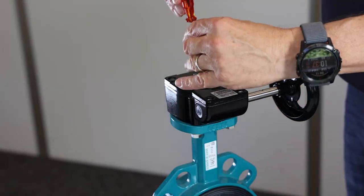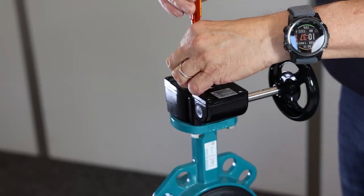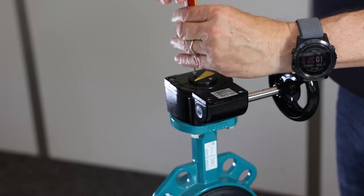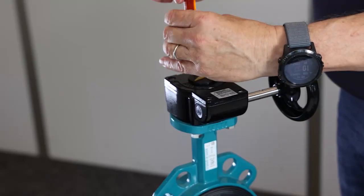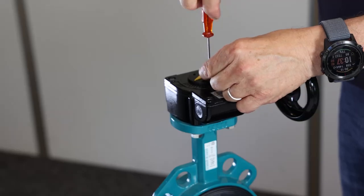As next step I remove the position indicator. Here I keep the screws. The position indicator itself will not longer be needed.